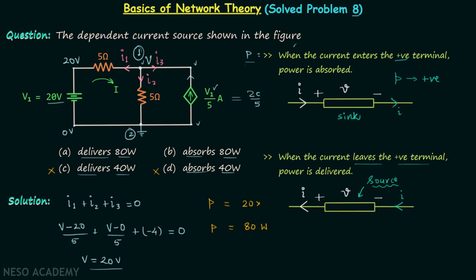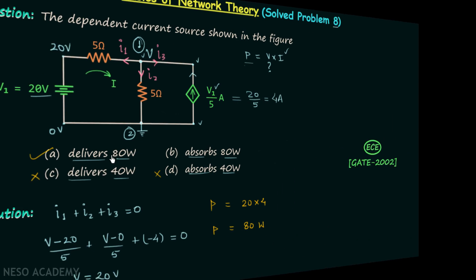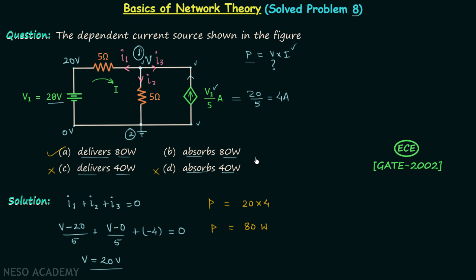In our case, the current is moving from low potential to high potential — that is, from minus to plus — so power is delivered. The dependent current source is delivering 80 watts of power. I hope you now understand how to deal with this type of problem.